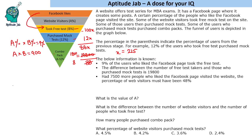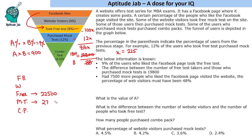Let us write out the funnel stages: Facebook page, website, free test, mock test purchased, and combo pack. Free test takers: 22,500. Mock test purchases: 12 percent of 22,500 equals 2,700.